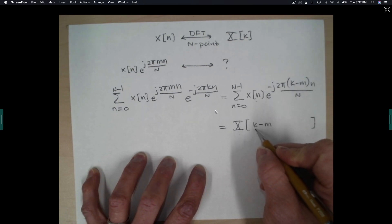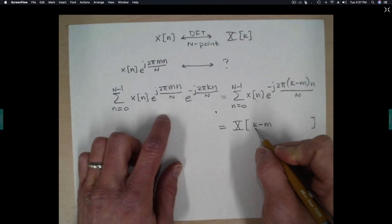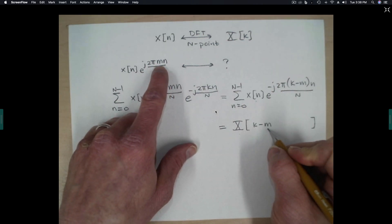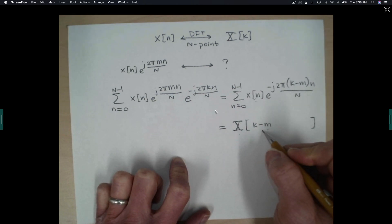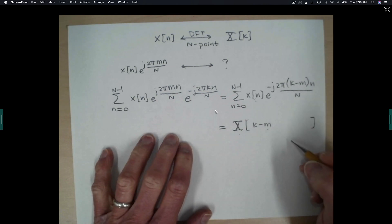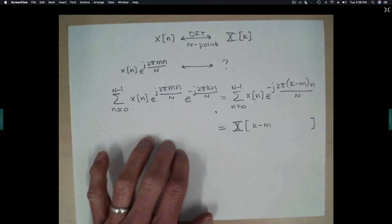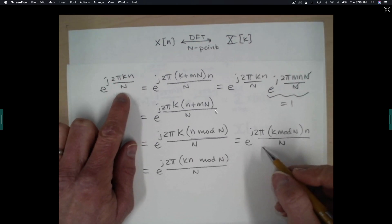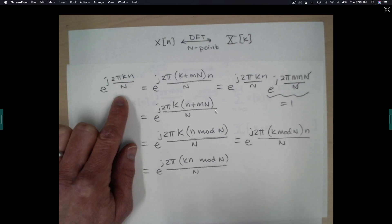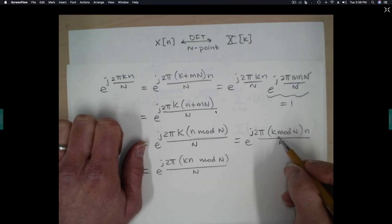So we run into problems here, because what would happen if k is equal to 0 and the m that we chose was equal to 1? Then we would be basically sitting here asking, what is the value of the DFT at index negative 1? Well, index negative 1 doesn't exist. So how do we work ourselves out of this problem? It's pretty easy. All we have to do is go back to the properties of the complex exponential.